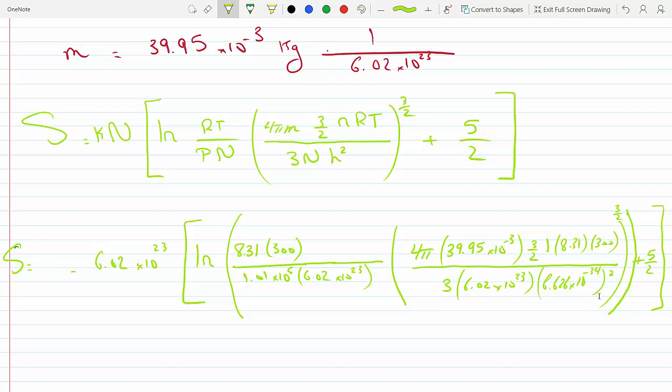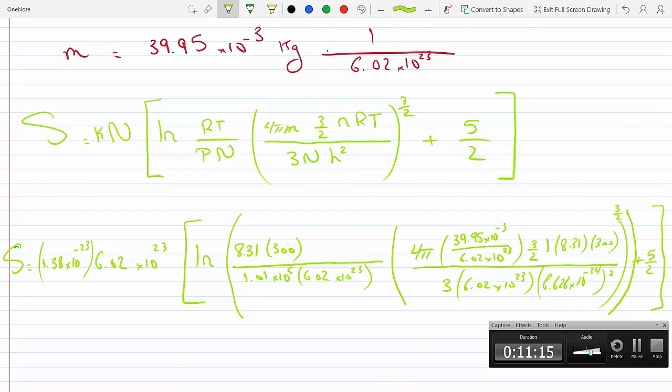Boltzmann's constant is 1.38 times 10 to the minus 23. And here we have to adjust this, so I would have to divide this by Avogadro's number. So this will be 39.9 times 10 to the minus 3 divided by 6.02 times 10 to the 23.